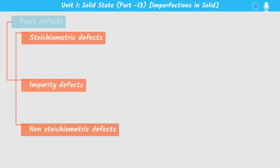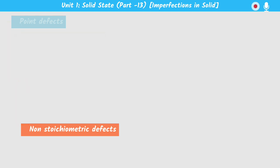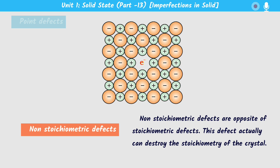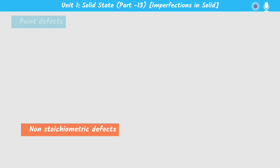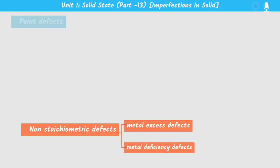Another example of impurity defects is the solid solution of cadmium chloride and silver chloride. The last defect is non-stoichiometric defects, which is the opposite of stoichiometric defects. In stoichiometric defects the formula of the compound is preserved, but in non-stoichiometric defects the stoichiometry will be disturbed. Non-stoichiometric defects are classified into two types: metal excess defects and metal deficiency defects.